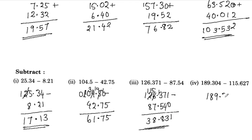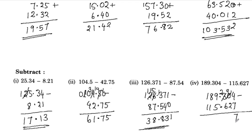189.304 minus 115.627: 12 — 12 minus 6 is 6, 12 minus 6 is 6, 8 minus 5 is 3, 8 minus 1 is 7. The answer is 73.677.